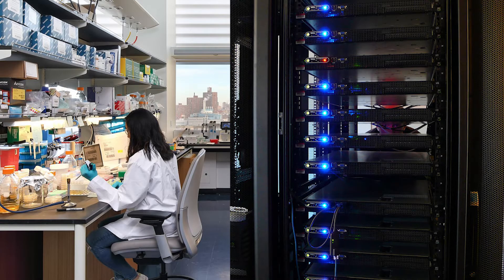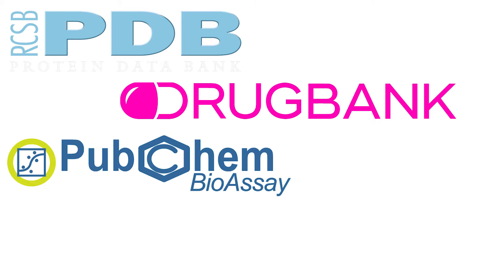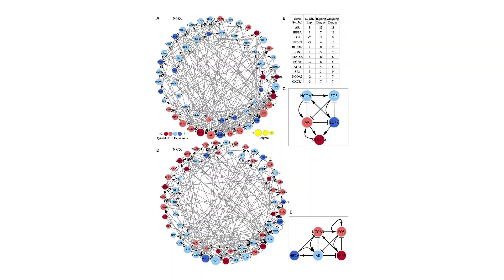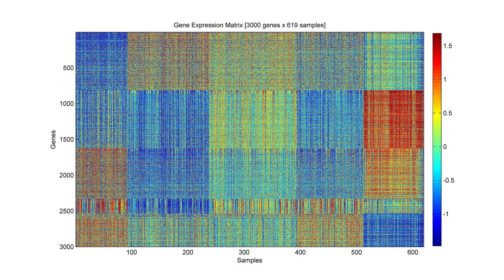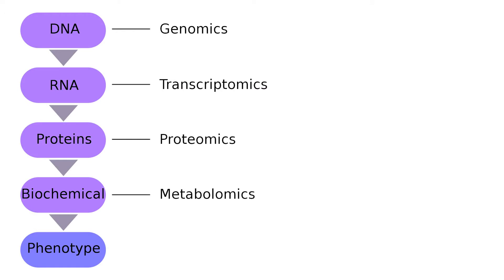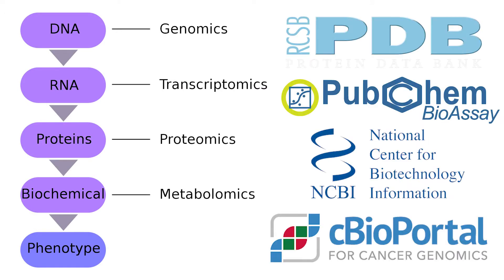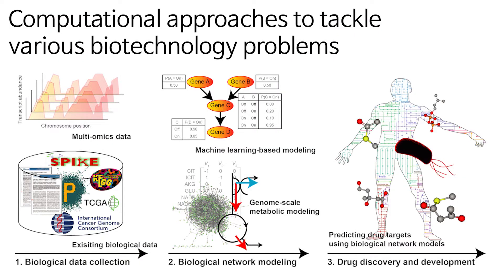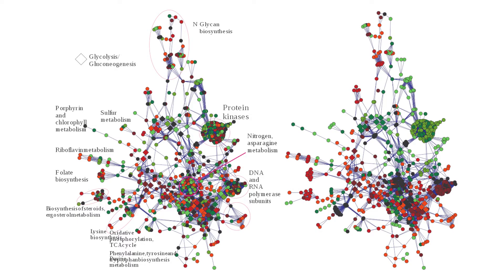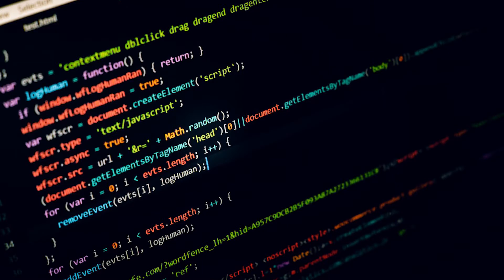So how does one do biological research with a computer? In the era of big data, the volume of biological databases expands day by day. There are countless types of data, including sequence data, network data, and gene expression data. Our primary job is to generate meaningful biological insights from these types of data. We utilize multi-omics data, public data, and more to create a model that helps drug discovery and development. In order to formulate these models, we base our techniques on machine learning and genome-scale metabolic modeling techniques. Our main programming language is Python.